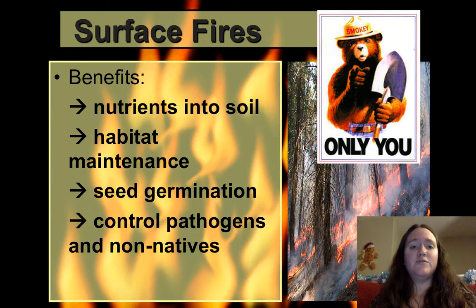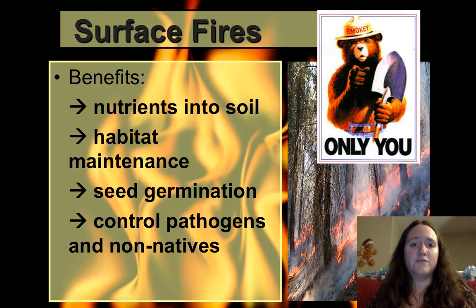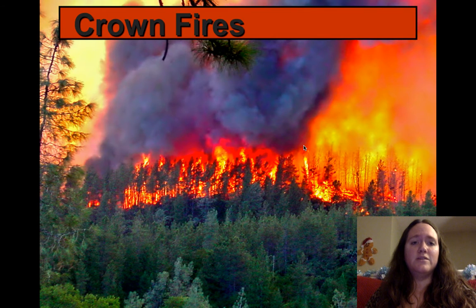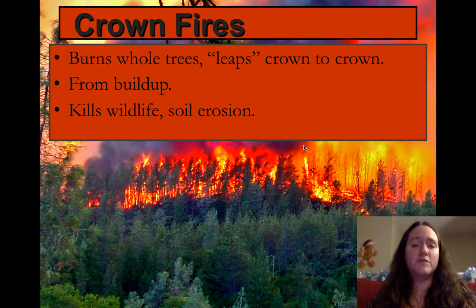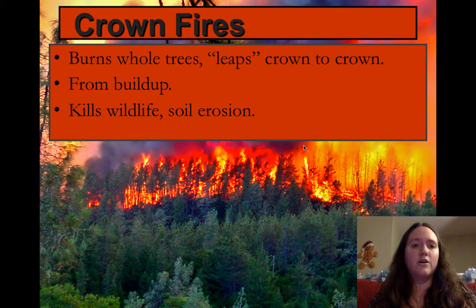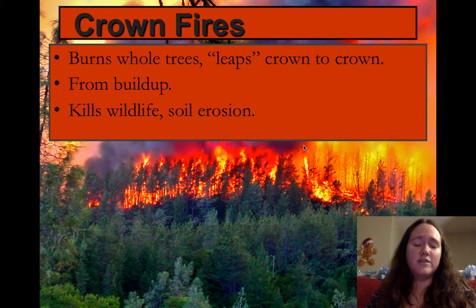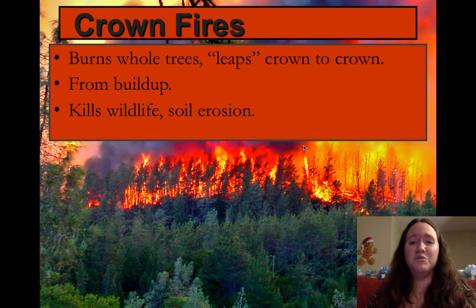The problem is if you stop all surface fires, you get a buildup of leaf litter and end up with crown fires — the more typical huge forest fires people think of. A crown fire is where whole trees are burning and fire leaps from crown to crown. This kills a ton of wildlife, causes soil erosion, and pollutes the air.